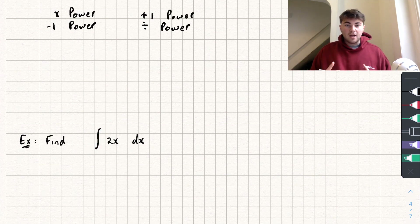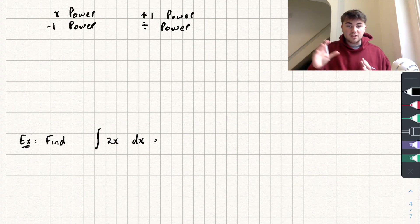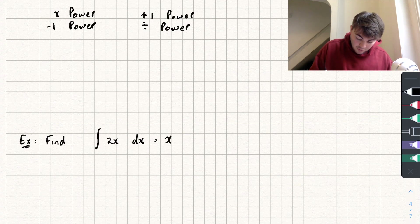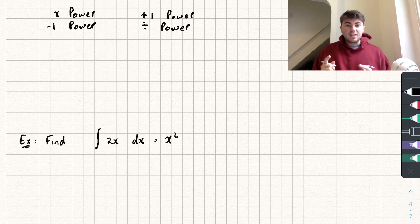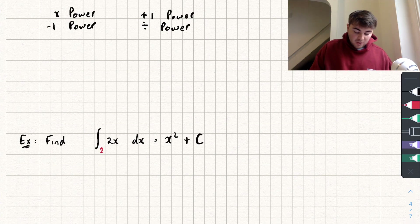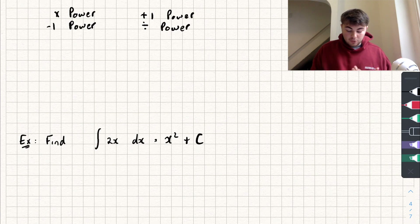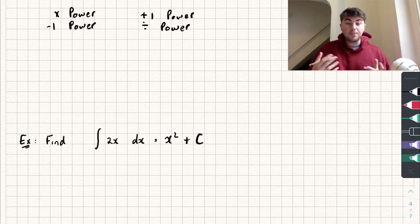This symbol here represents the integral — it's just a stretched-out S. We want to find the integral of 2x with respect to x; that's what the 'dx' means. We add one to the power to get x squared, divide by the new power to get 2x squared divided by 2, which leaves x squared, and then we add the constant of integration, plus c. For definite integrals there are bounds, but for the indefinite integrals we're looking at today — the ones without bounds — we always add plus c.